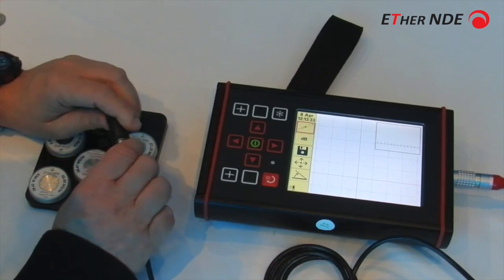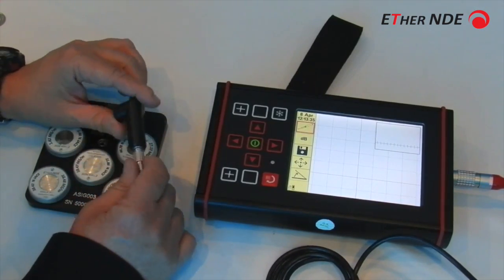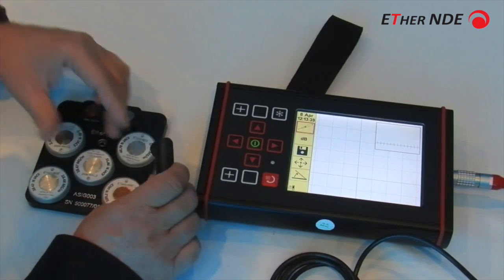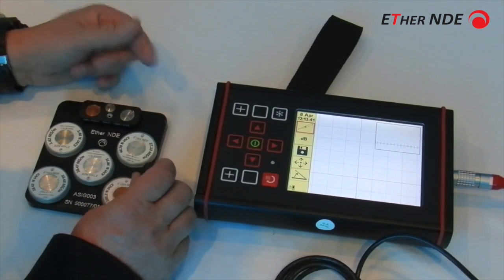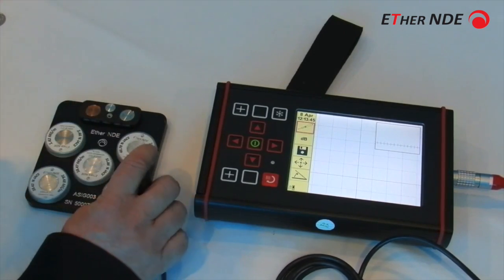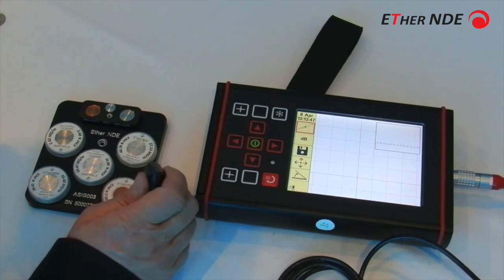Material sorting can be done with a wide variety of eddy current probes and at a wide variety of frequencies. Generally speaking, for doing non-ferrous material, 60 kHz, which is the standard frequency used in conductivity meters, is normally a pretty good place to start.